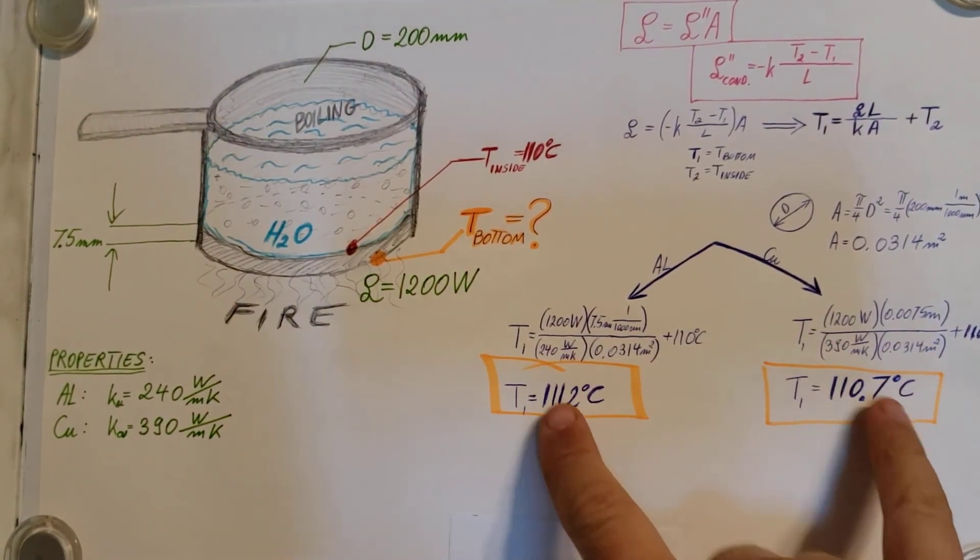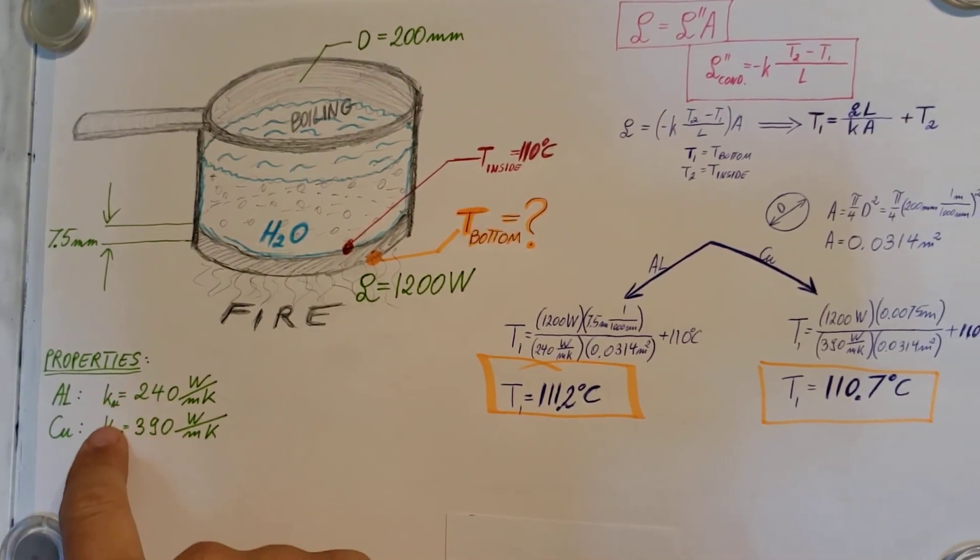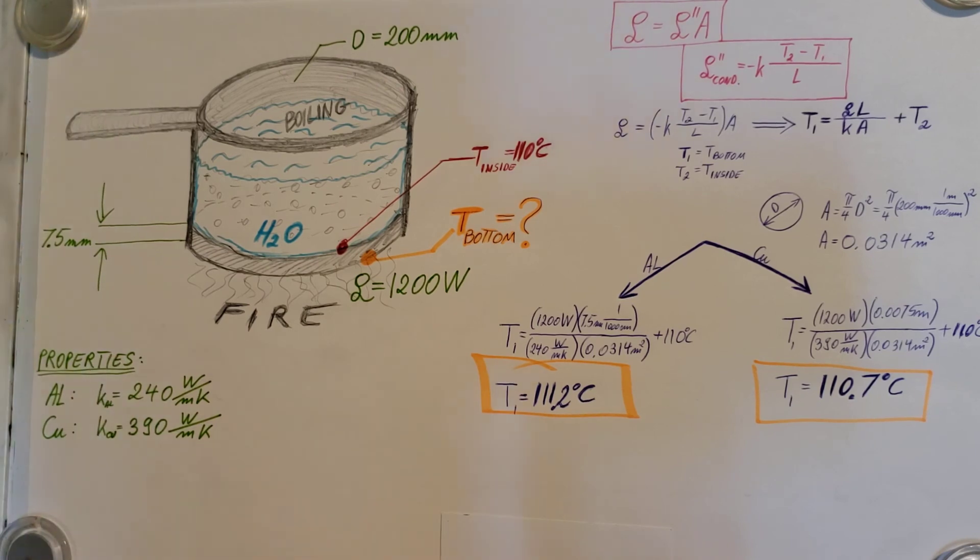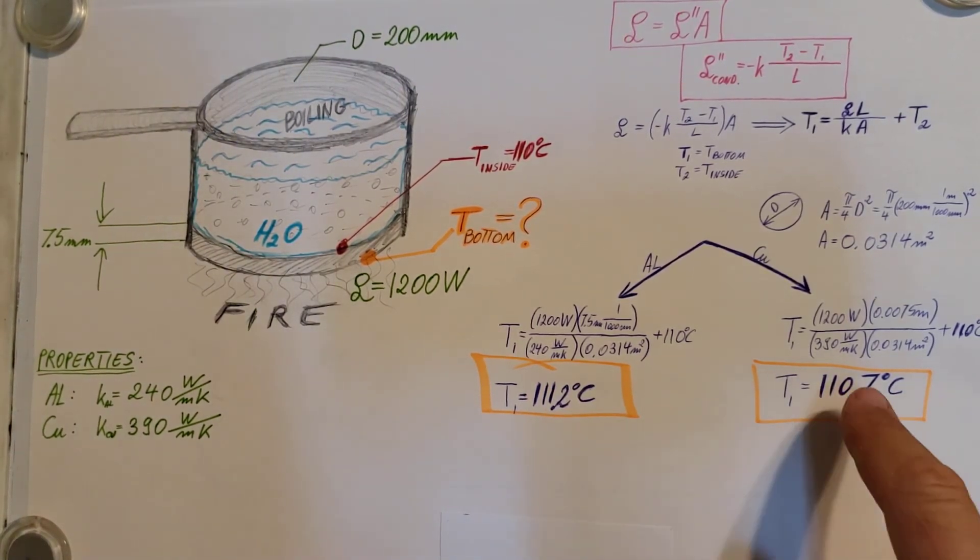As we can tell, different materials have different K values, different properties, and therefore we're going to have different temperatures.